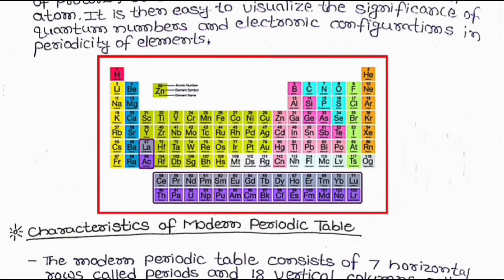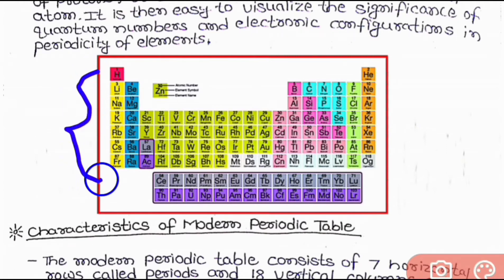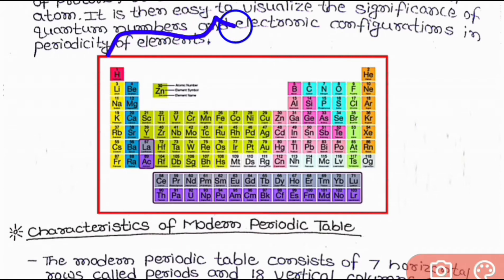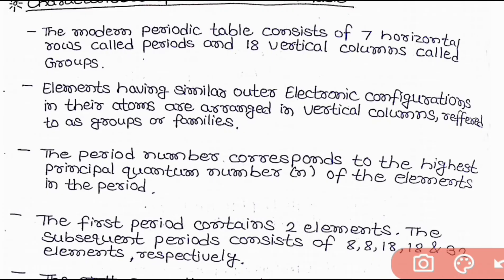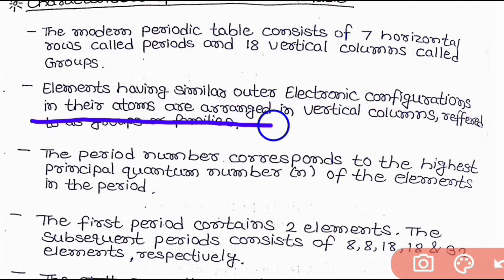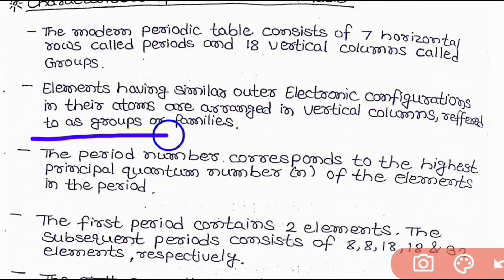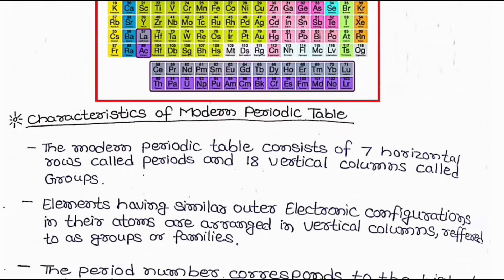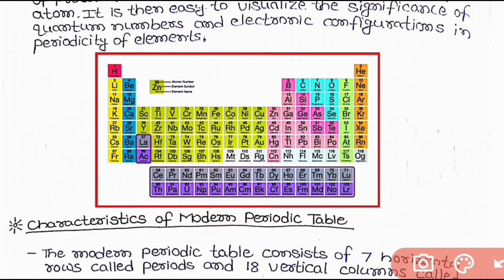Now let us look at the periodic table. The horizontal rows are seven in number and are called periods, while the vertical columns are 18 in number and are called groups. Elements having similar outer electronic configuration in their atoms are arranged in vertical columns referred to as groups or families. This means that those elements which have similar outer electronic configurations are arranged in the same group.